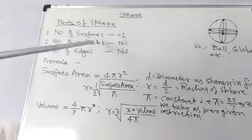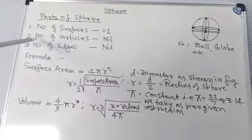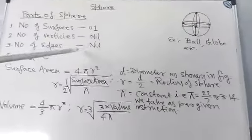Number of surfaces: 01. Number of vertices: nil. Number of edges: nil.